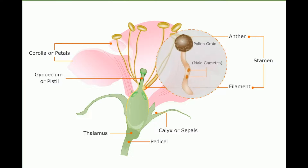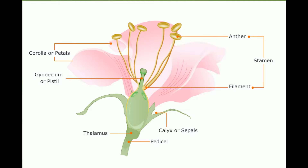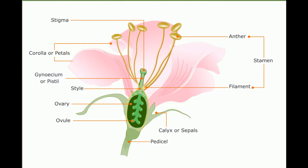The female part of the plant is made up of the stigma, which is the terminal part of the pistil; the thread-like structure called the style; and the basal swollen part called the ovary. The ovary has ovules which contain the female reproductive cells called ova.